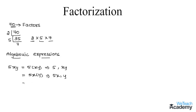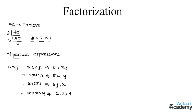We can also write this term as 5y × x, and therefore the factors would be 5y and x. Similarly, we can write 5xy as 5 × x × y, so the factors would be 5, x, and y. Among all these, the factors 5, x, and y are irreducible factors — thus 5, x, and y is the irreducible form of 5xy.